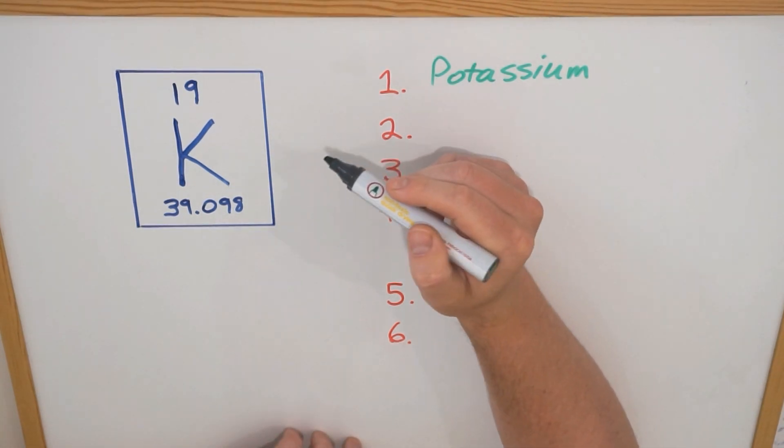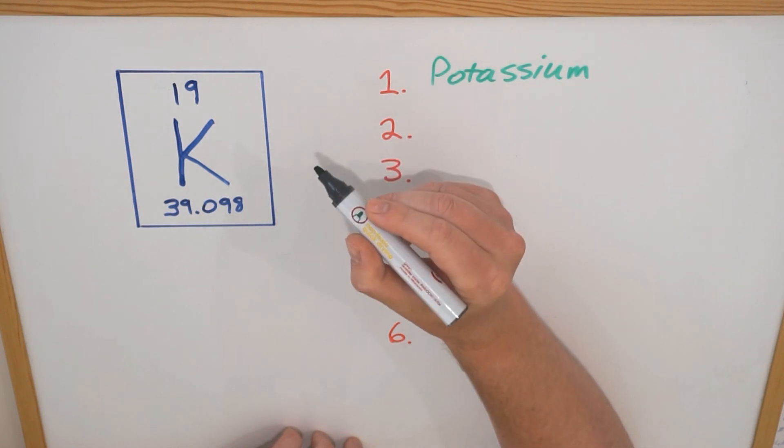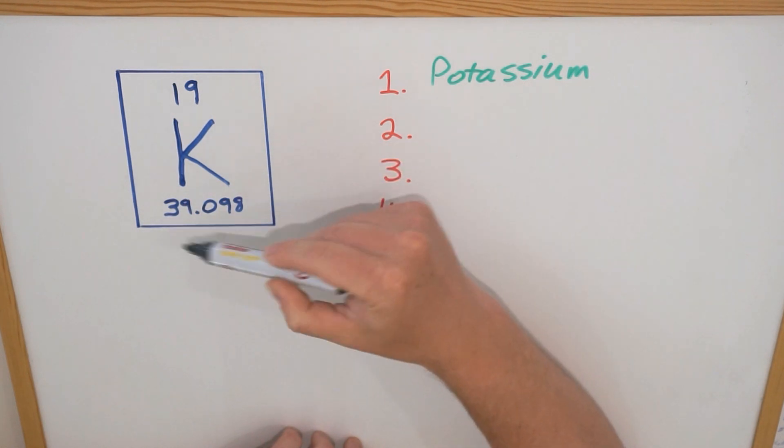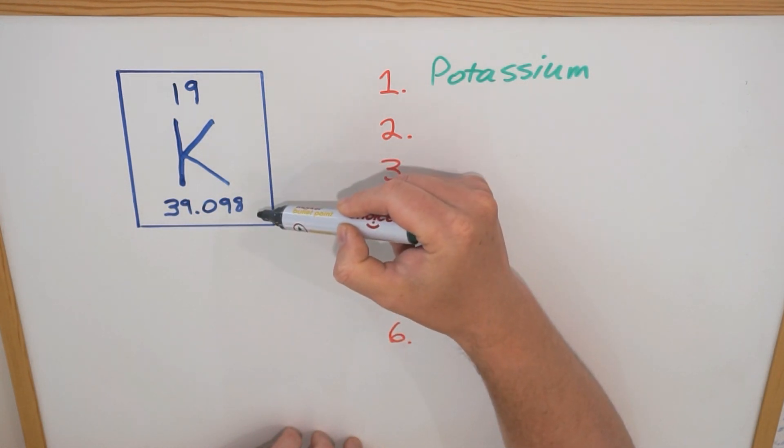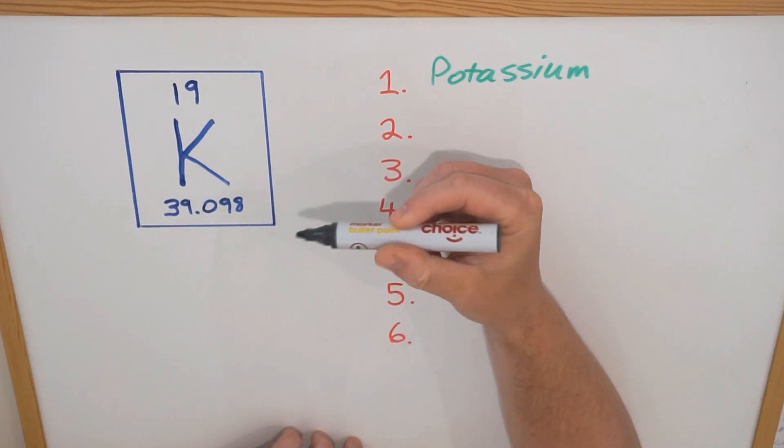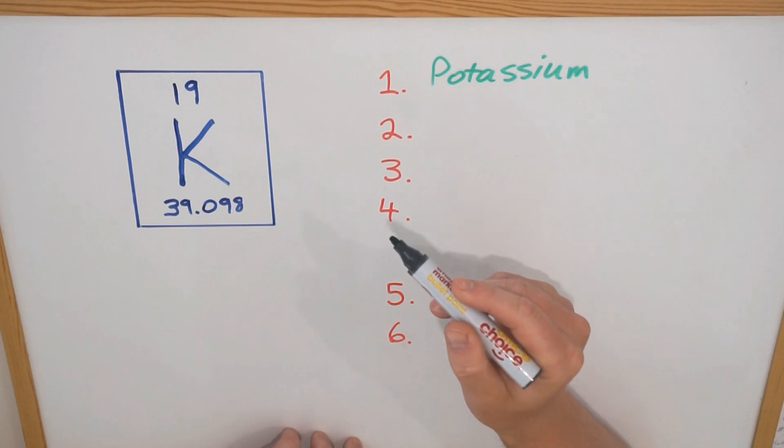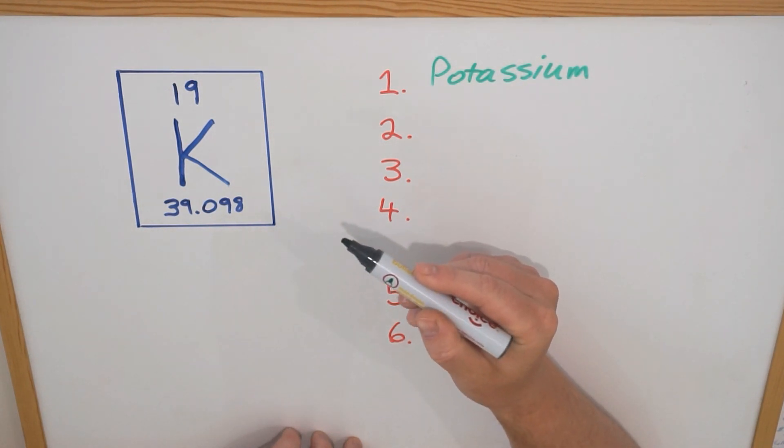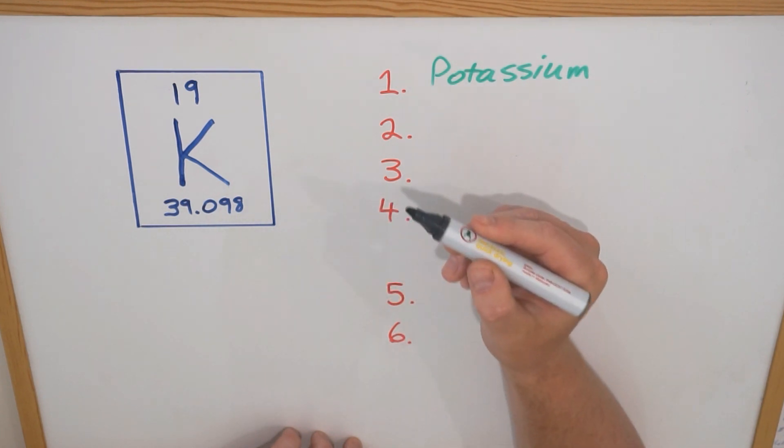The second thing that you might get asked is to identify the atomic number and the mass number. In most periodic tables it's arranged like this - the top number is your atomic number, the bottom number is the mass number. If it is rearranged you can also remember that the smaller number is the atomic number, the bigger number is the mass number, and these two numbers are really important because they can tell you some key information about this element.